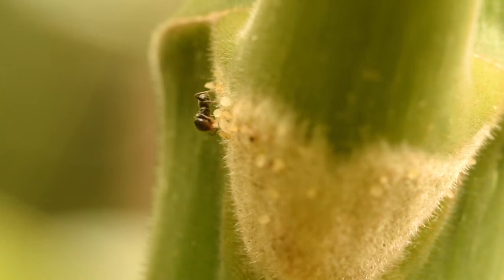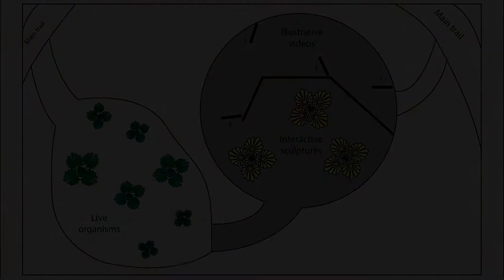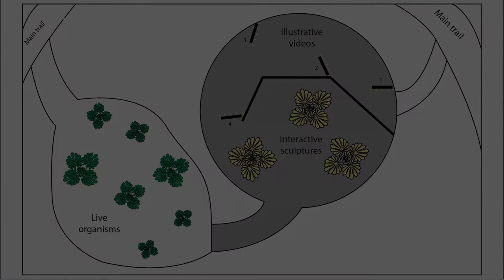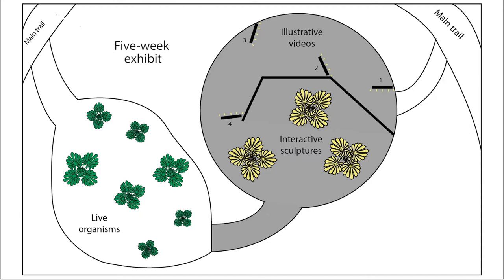To inform the entrance design before it's built, we created a three-stage temporary walk-through test exhibit combining illustrated video footage, interactive sculptures, and live organisms. Visitors enter the exhibit off the main trail and enter a closed pavilion with a series of four large TVs, each playing a different short loop that I filmed to cover key aspects of the mutualism.